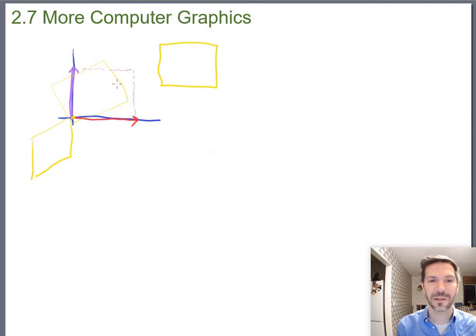Not even change the size, just shift it over two and up three or something. And we haven't been able to do that so far and let's take a little bit of a look at why. Why can't we just add three to the x-coordinates?